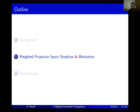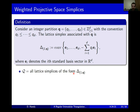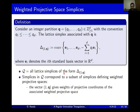Now we can introduce what it means to have a weighted projective space. We start with an integer partition q consisting of positive integers q1 through qd, using the convention that they weakly increase, giving us a unique representation for any partition. We then define a lattice simplex associated with that partition — taking the convex hull of the d standard basis vectors and the negative of the q vector. The set of simplices satisfying this form are referred to as weighted projective space simplices, and the name comes from a relationship they have to algebra: simplices in this set correspond to a subset of the simplices that define weighted projective spaces.